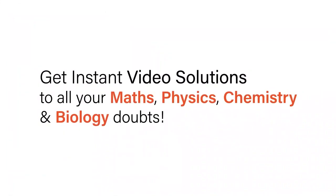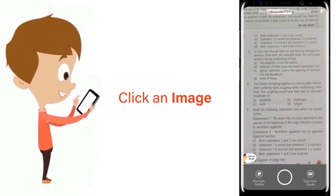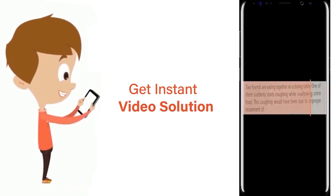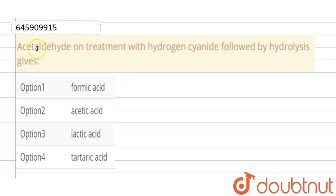With Doubtnut, get instant video solutions to all your maths, physics, chemistry and biology doubts. Just click the image of the question, crop the question and get instant video solution. Download Doubtnut app today. Our question is: acetaldehyde on treatment with hydrogen cyanide followed by hydrolysis gives